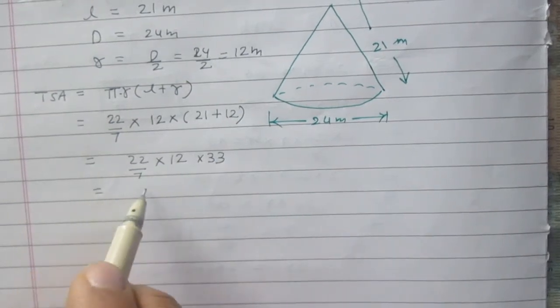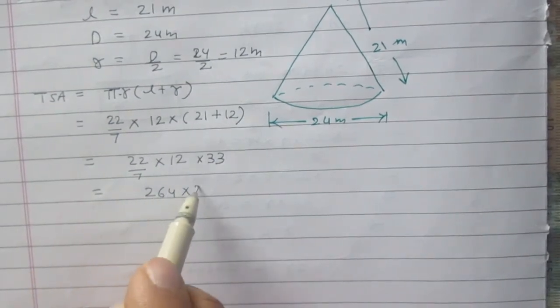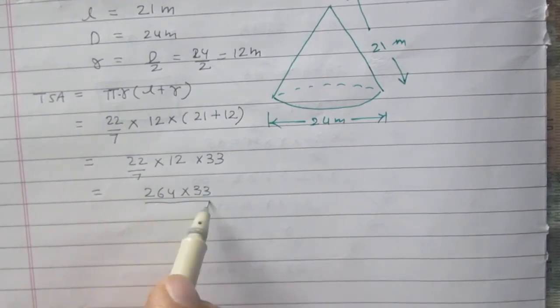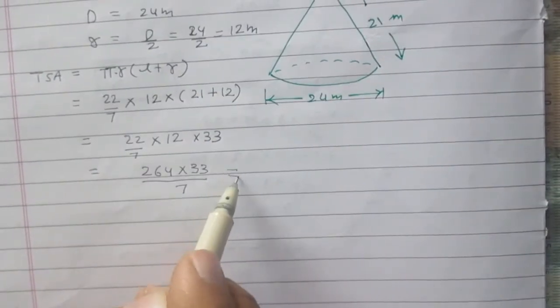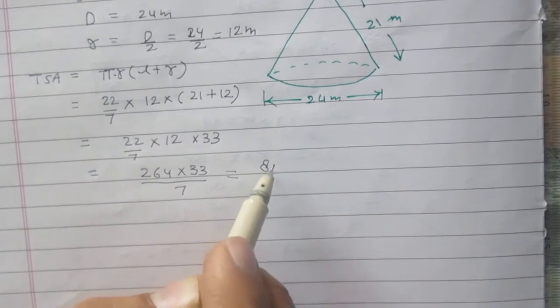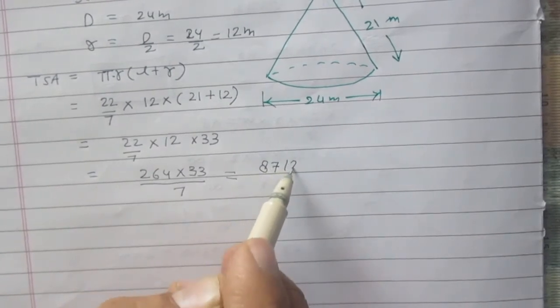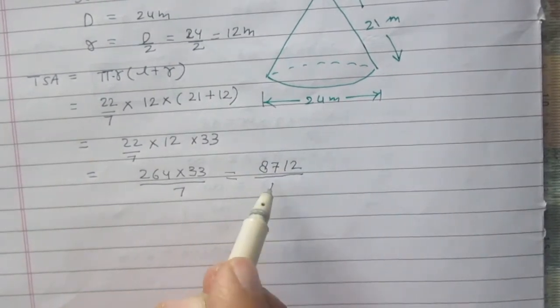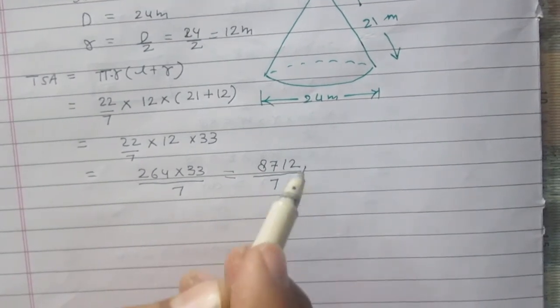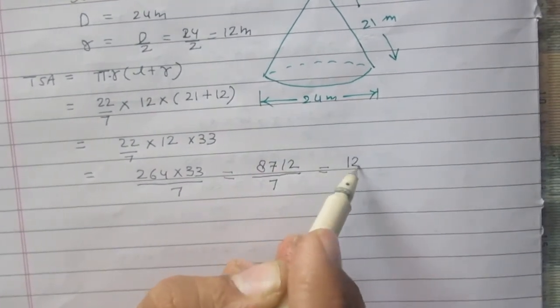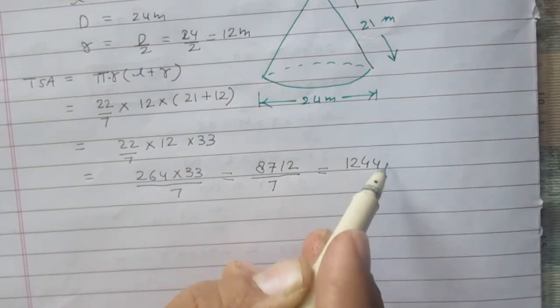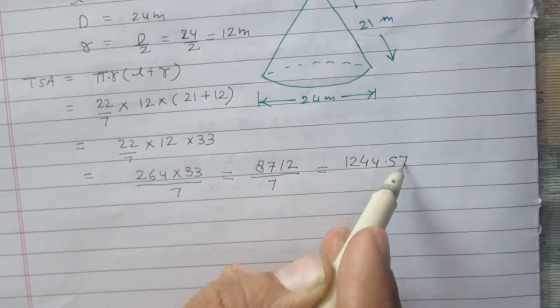It is 264 multiplied by 33 upon 7, and then it is 8712 divided by 7. And finally we will get 1244.57 after calculation.